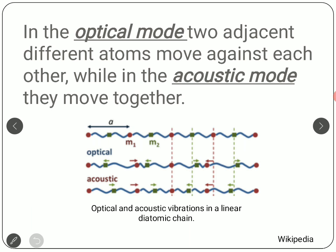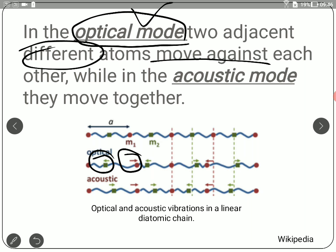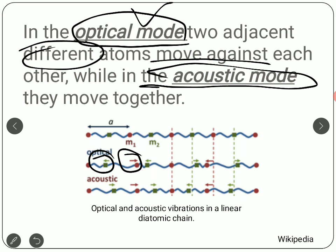When we talk about an optical mode of vibration with two different atoms in a system, the key point is that they move against each other. This is called the optical mode of vibration. In the acoustic mode of vibration, two different atoms move in the same direction. This is for a linear diatomic chain — information that was missed in the last lecture.